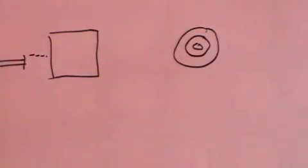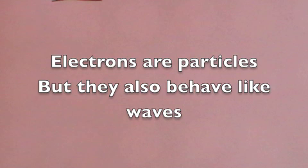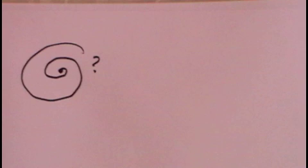But there was an enormous consequence of this. Electrons are not only particles, they are also waves. And this might be the solution to the problem of how is it that electrons don't spiral into the nucleus.